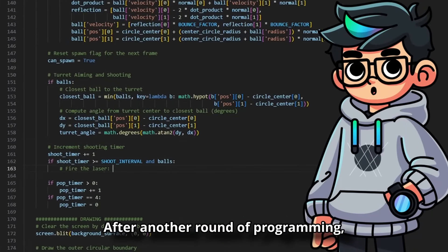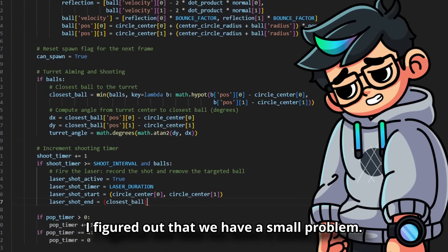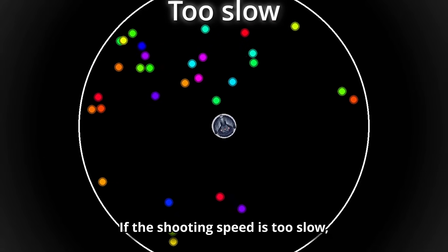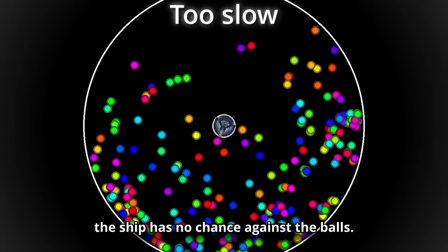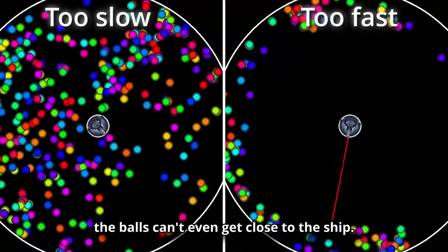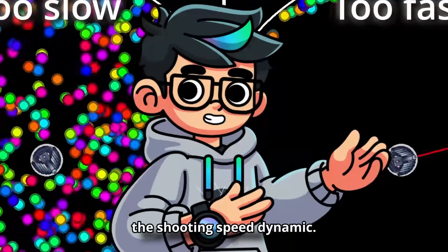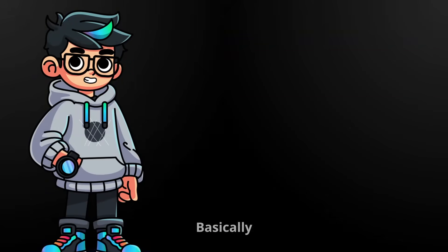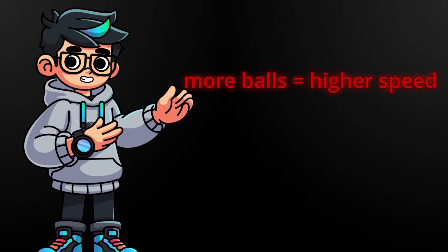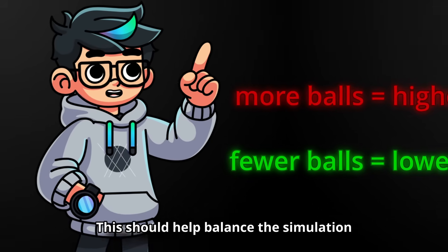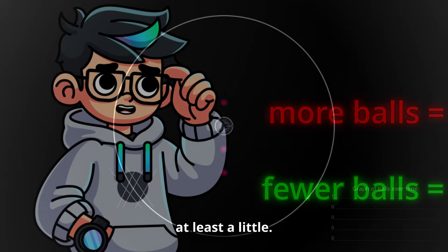After another round of programming, I figure out that we have a small problem. If the shooting speed is too slow, the ship has no chance against the balls. But if it is too fast, the balls can't even get close to the ship. So, we need to make the shooting speed dynamic. Basically, more balls equal higher speed. Fewer balls mean lower speed. This should help balance the simulation at least a little.